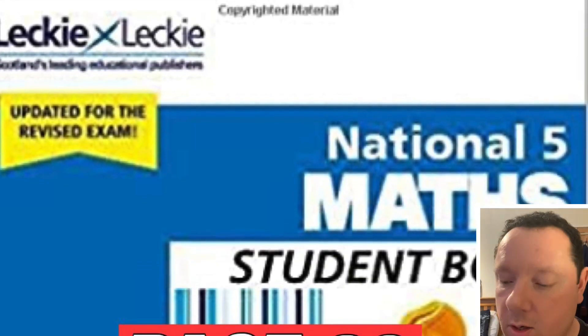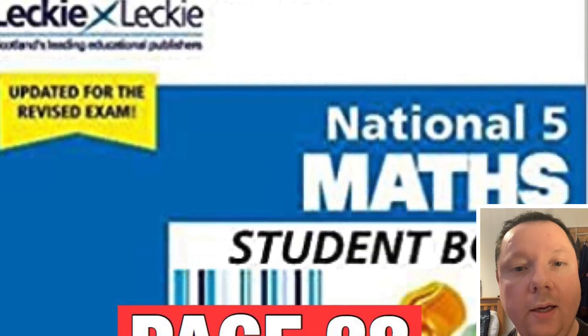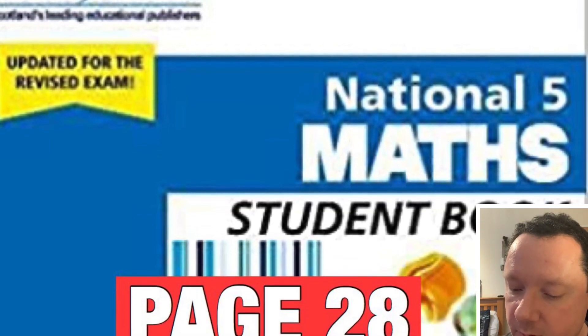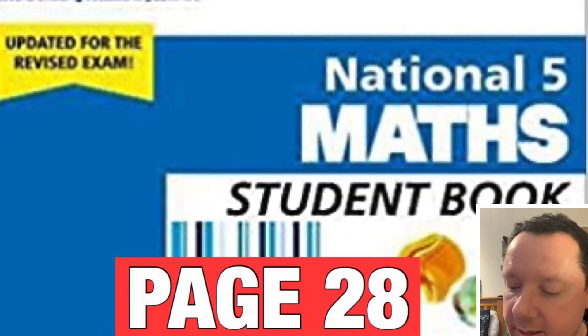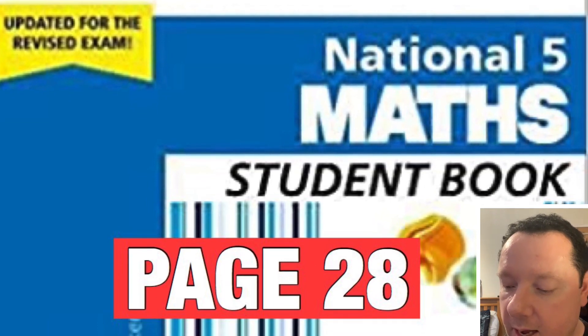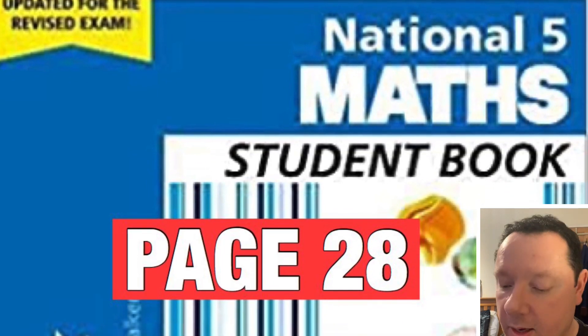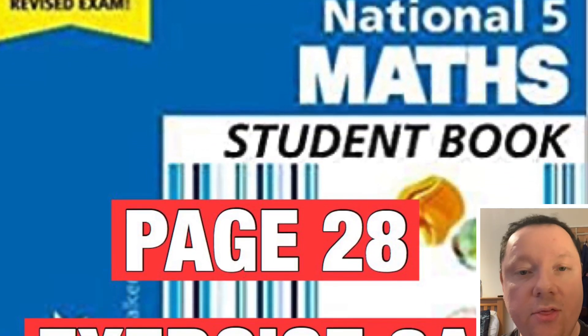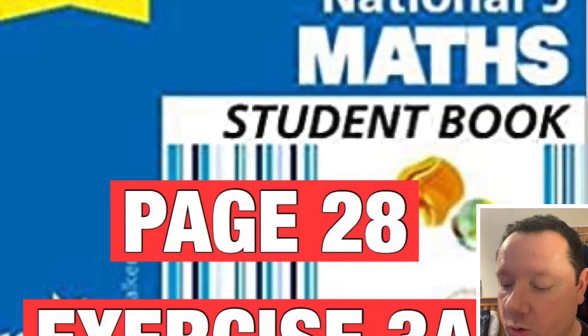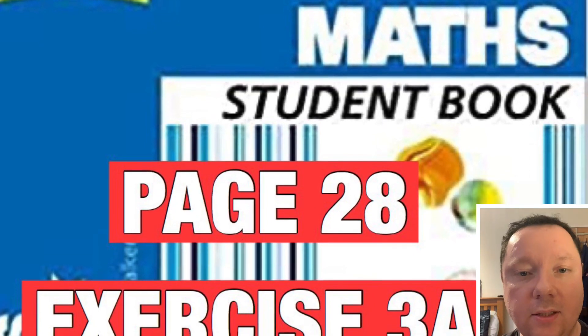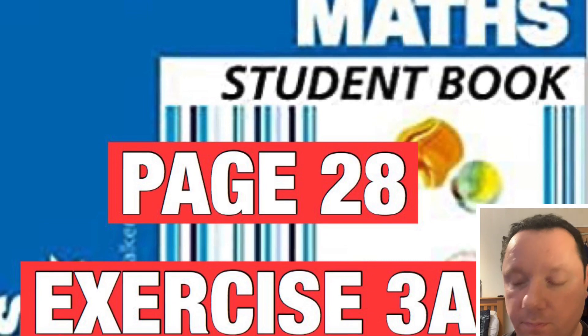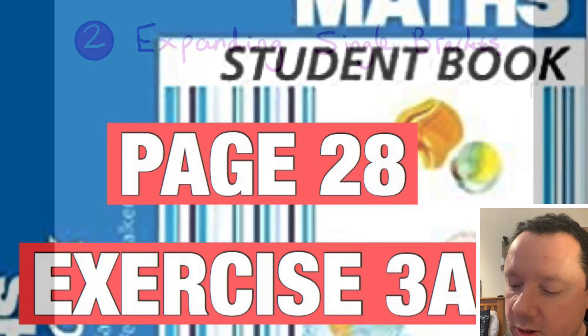If you are homeschooling and at home, I recommend the National Five Textbook and it's Leckie and Leckie National Five Textbook. If you can manage to get a hold of that, you would be looking at exercise 3a and it would be page 28 to practice this key skill of collecting like terms. Let's move on to our second thing.